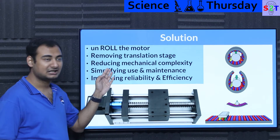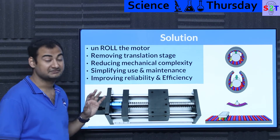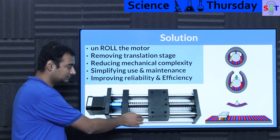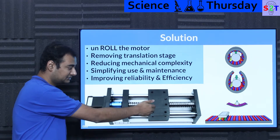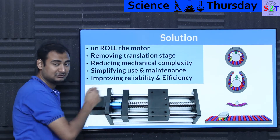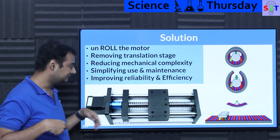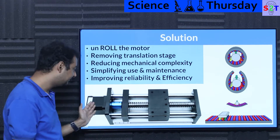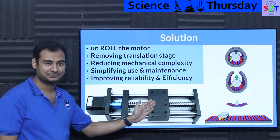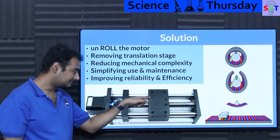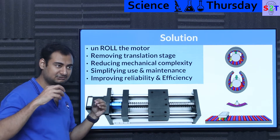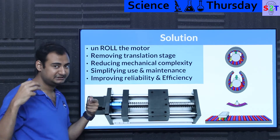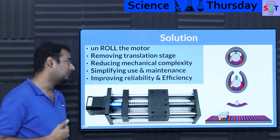Removing the translation stage is very desirable for motion. For example, you have a stepper motor, a screw, and a nut locked so it can only move back and forth. That inherently has so many steps in it — especially at the nut, which is basically turning rotational motion into linear motion — giving you a lot of friction and backlash.